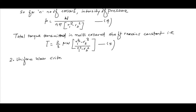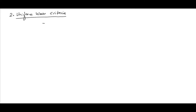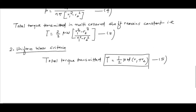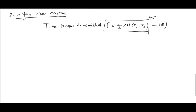Considering the uniform wear criteria, the total torque transmitted T = (1/2) × mu × W × (R1 + R2). This is equation 6. Details of this derivation — how we get these results for uniform wear and uniform pressure — will be shown in subsequent videos.